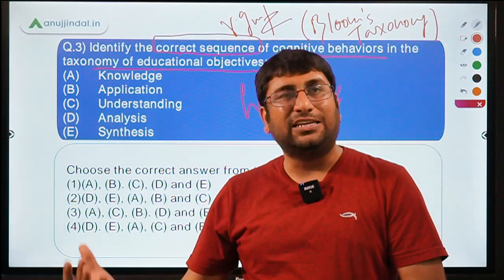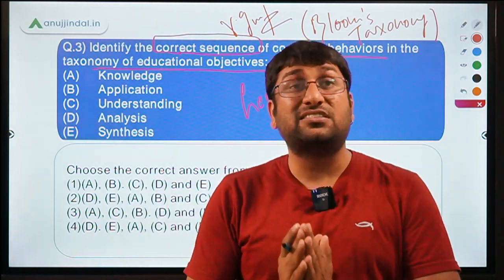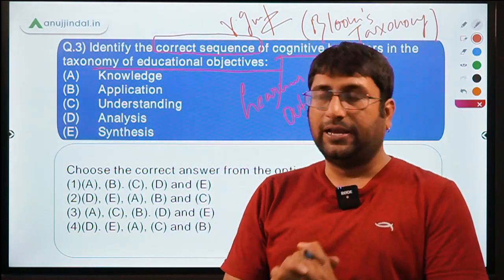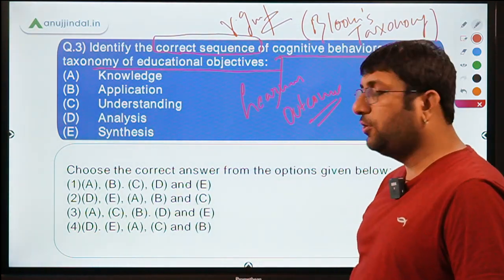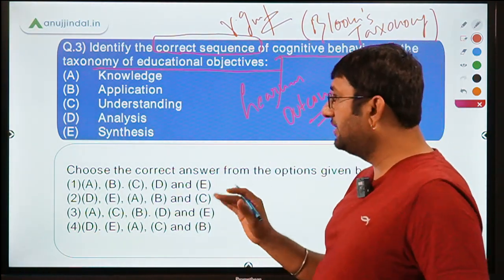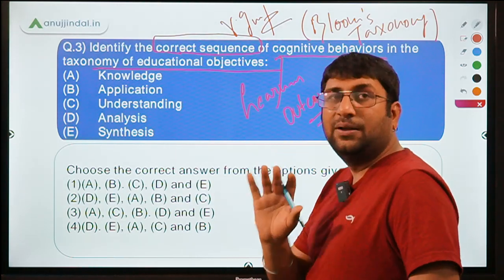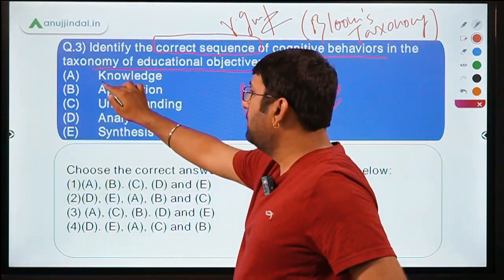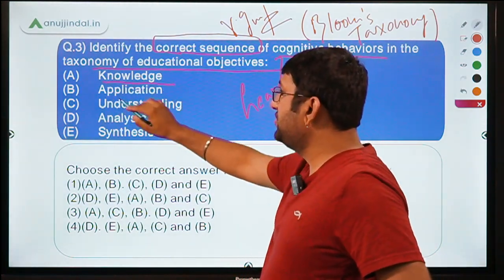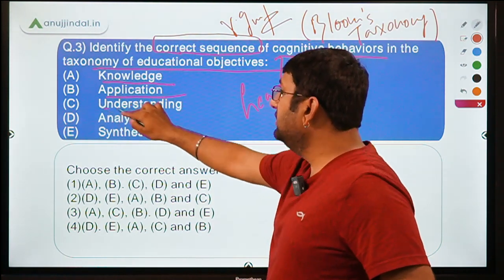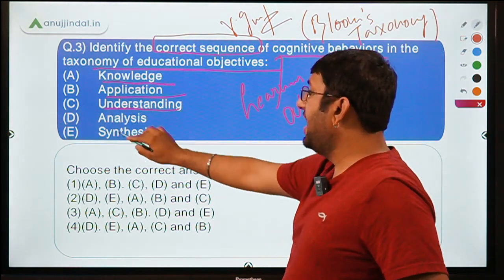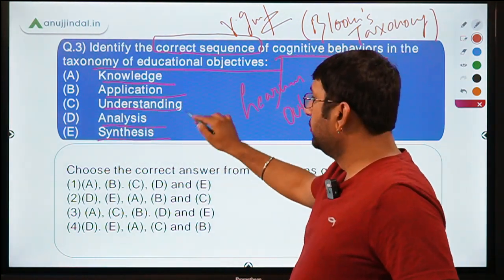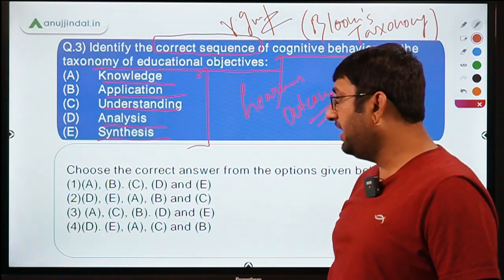The question gives you five elements: knowledge, application, understanding, analysis, and synthesis. You have to put them in the correct sequence for learning outcomes. Please comment your answer in the chat box while I explain Bloom's Taxonomy — a very important topic that has appeared two to three times in past year exams.